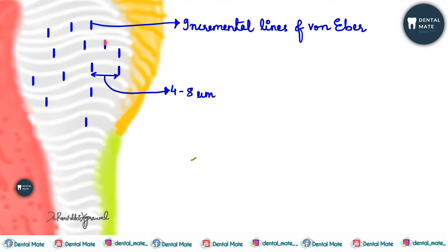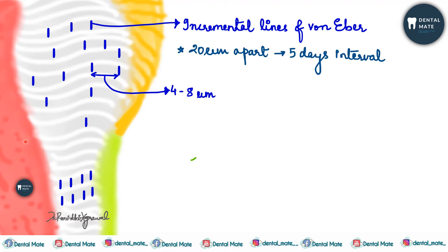These increments represent hesitation in the daily formative process. The distance between two lines is approximately 4 to 8 micrometers in the crown, and much lesser in the root — in the root they are closely packed. The daily increment decreases after the tooth reaches its functional occlusion, so these lines are closer together.